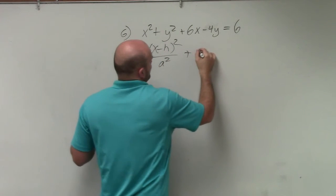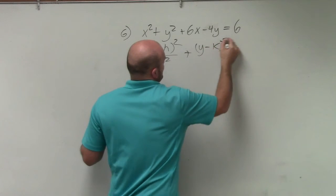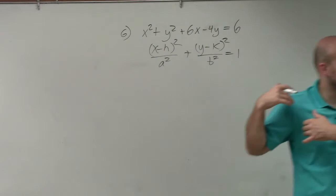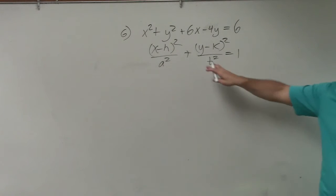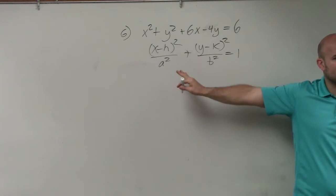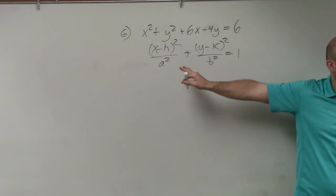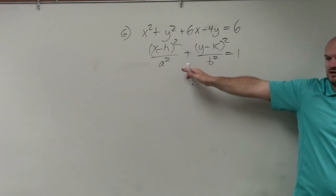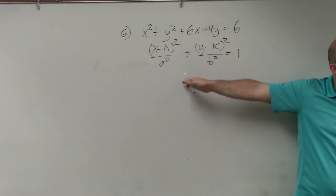That's x minus h squared divided by a squared plus y minus k squared over b squared equals 1. Per the last problem, if you have an equation in this format, it's pretty easy to find the center, the foci, or I'm sorry, the center, the vertices, and the co-vertices, right? Would you guys agree with me?